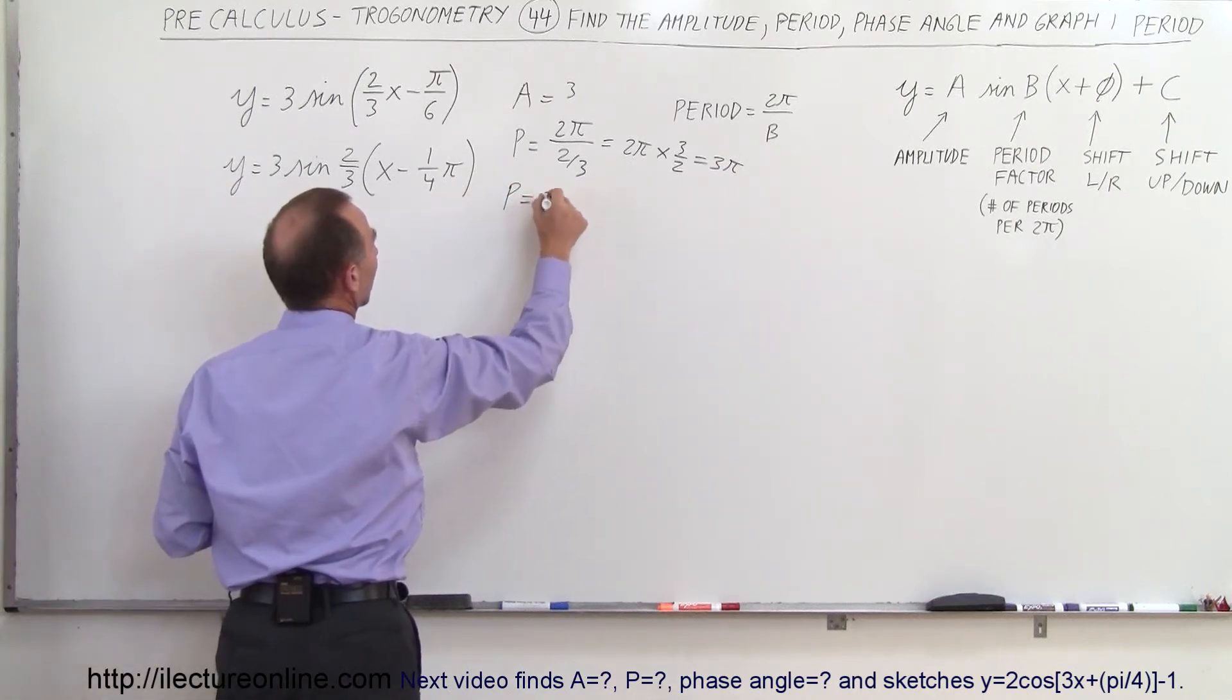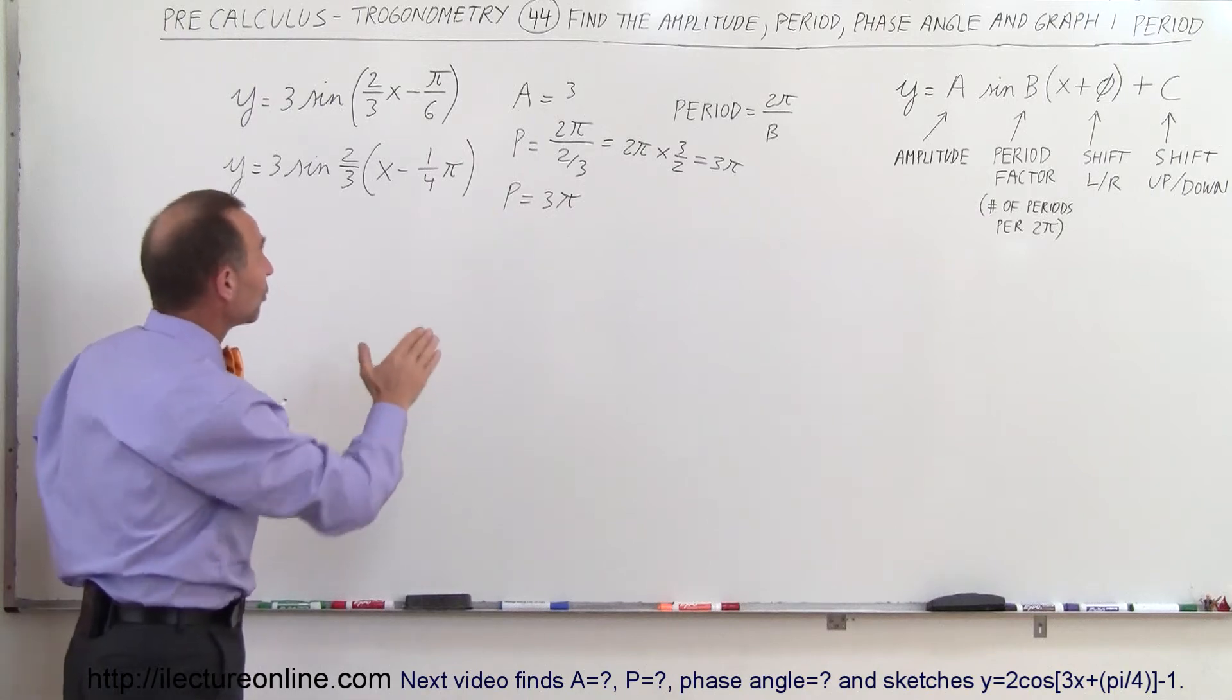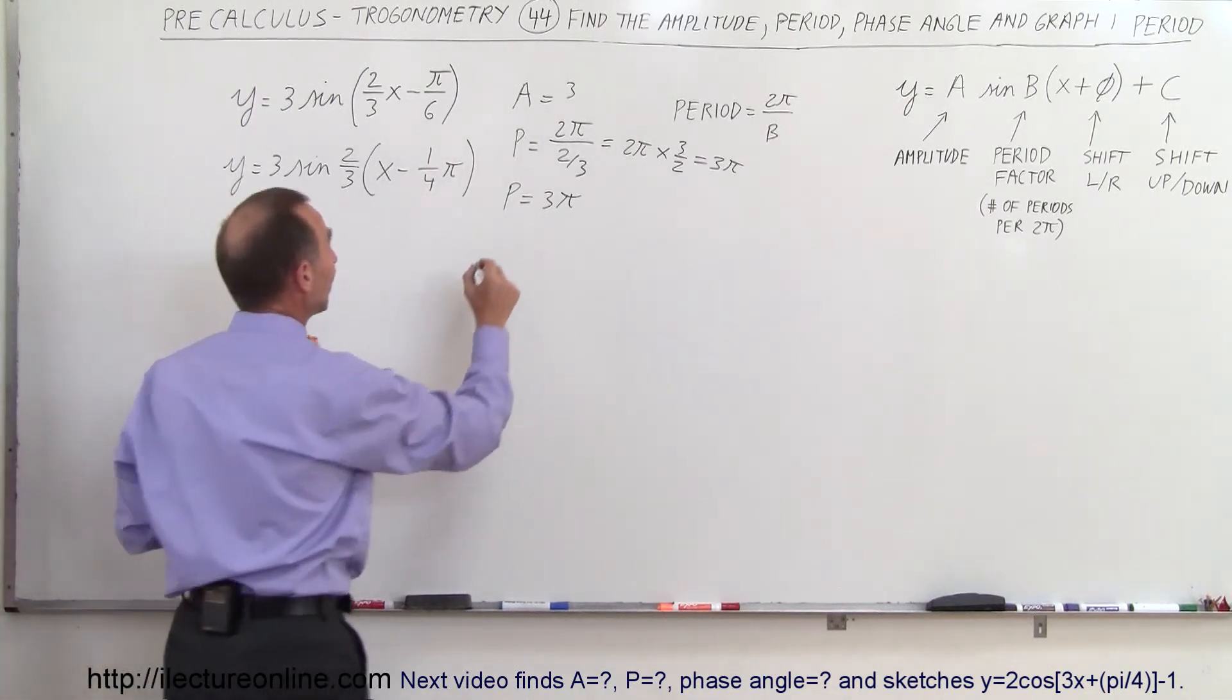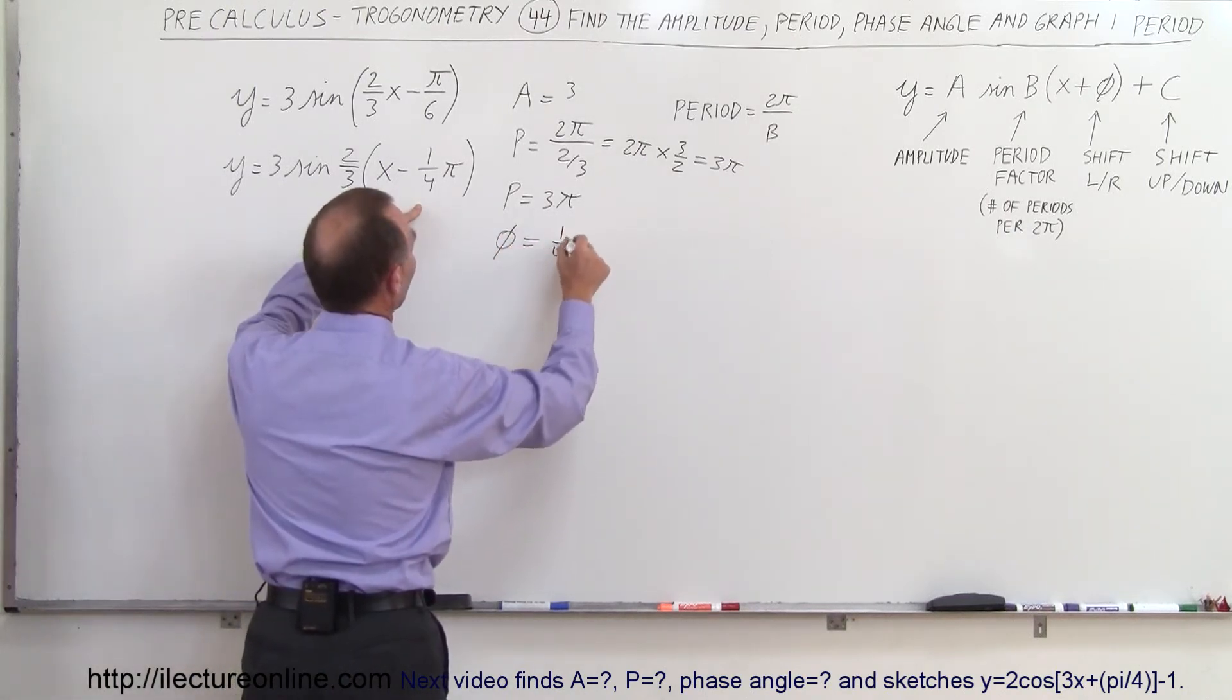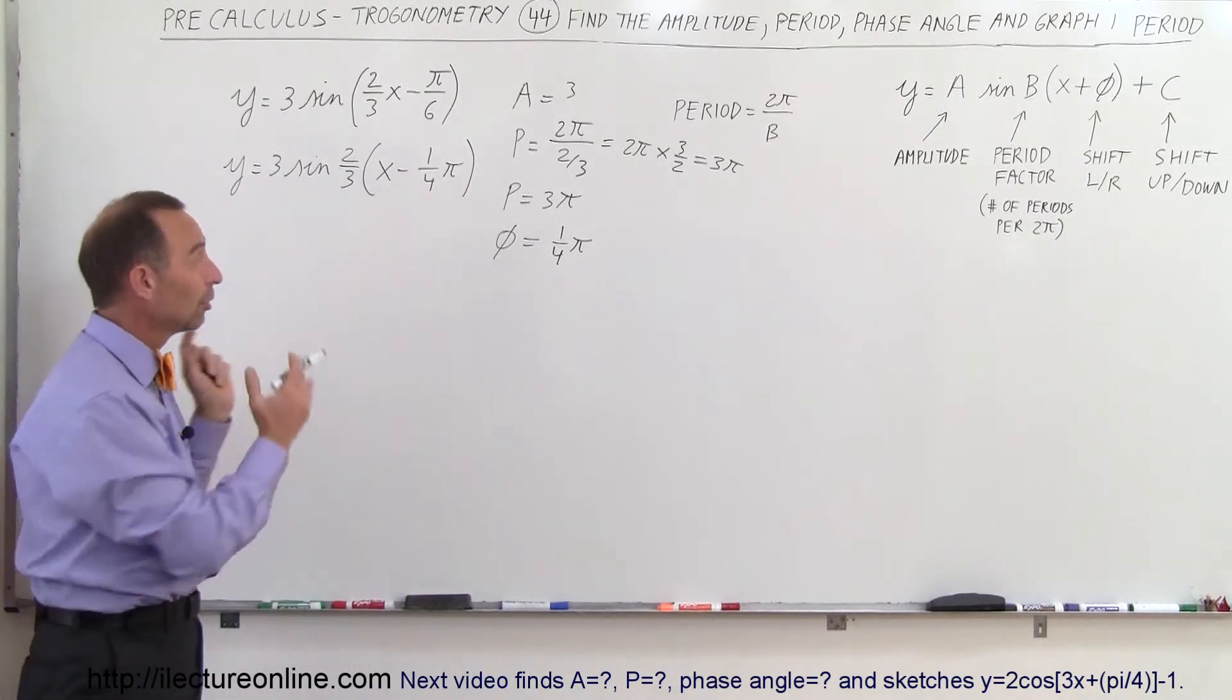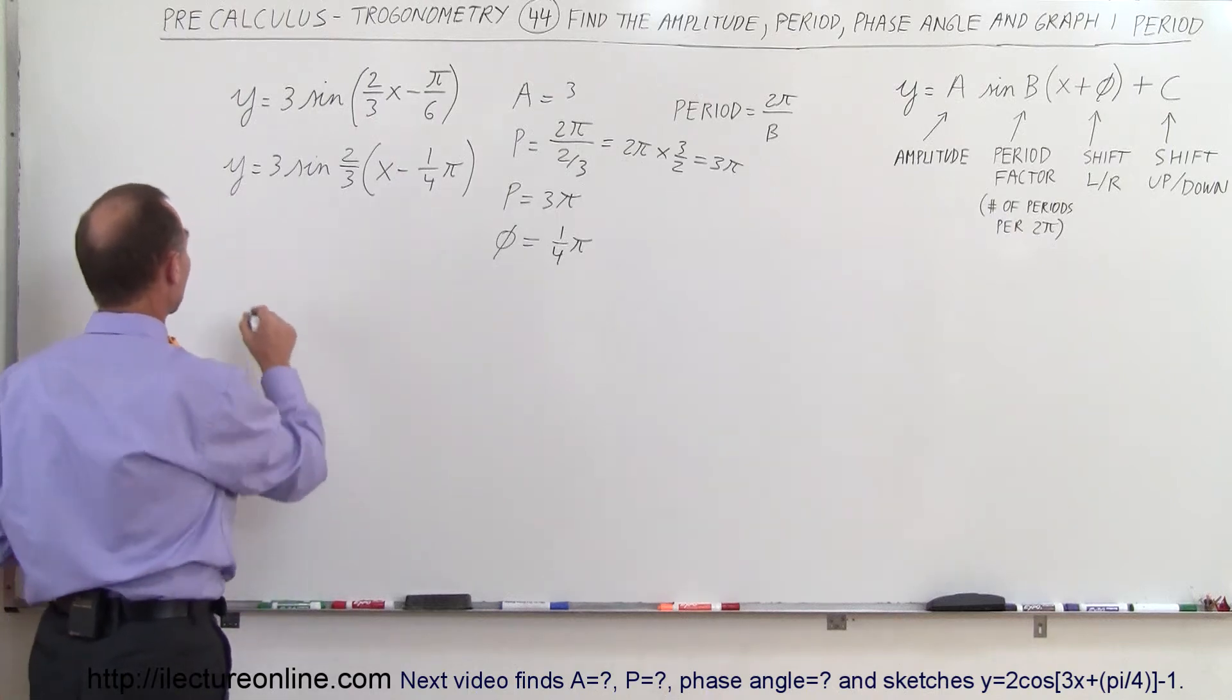You may say, well, I didn't make the mistake when I didn't factor out but the answer is yes, you wouldn't have, except that you would have gotten the wrong phase angle. In this case, the phase angle is equal to one-quarter π. That means it will have been shifted by one-quarter, since we have a negative there, the shift is to the right. Alright, okay, let's go ahead now and try to graph this.